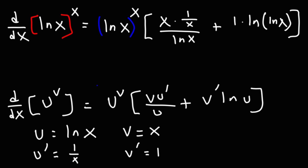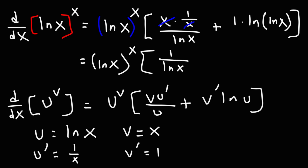Now we can simplify this. 1 over x times x, these will cancel to 1. So this is going to be ln x raised to the x, times 1 over ln x, plus ln of ln x. So that's going to be the answer for this problem.